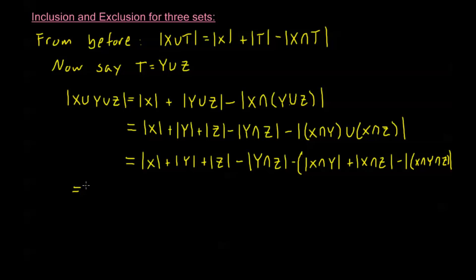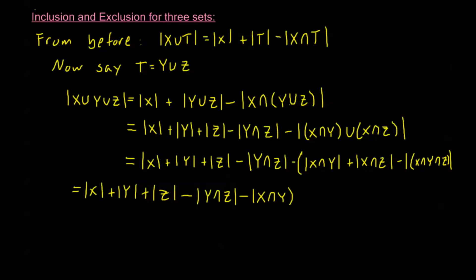Writing it all out, the final result is: the order of X plus the order of Y plus the order of Z minus the order of Y intersection Z minus the order of X intersection Z minus the order of X intersection Y, plus the order of X intersection Y intersection Z. This is the Principle of Inclusion and Exclusion for three sets.